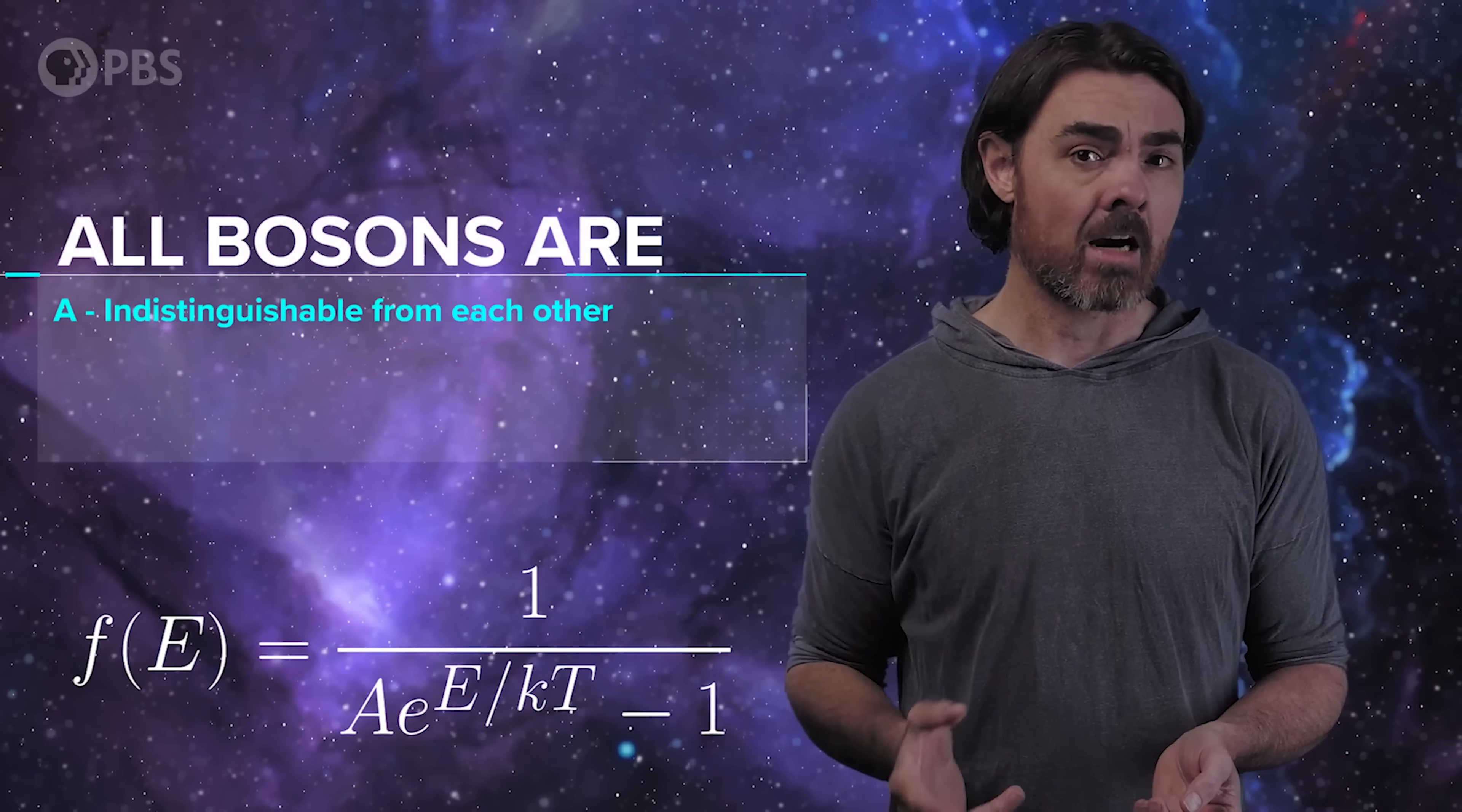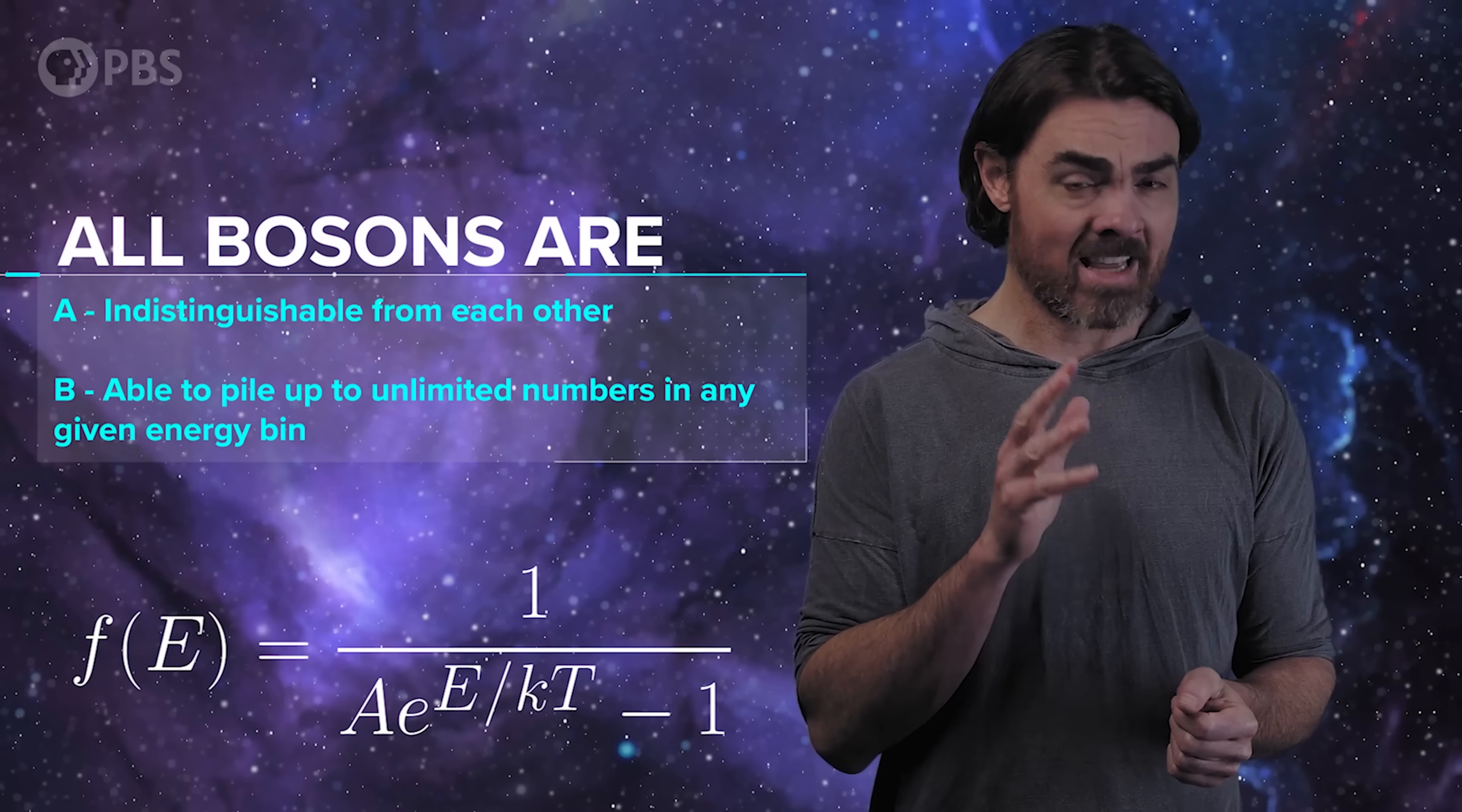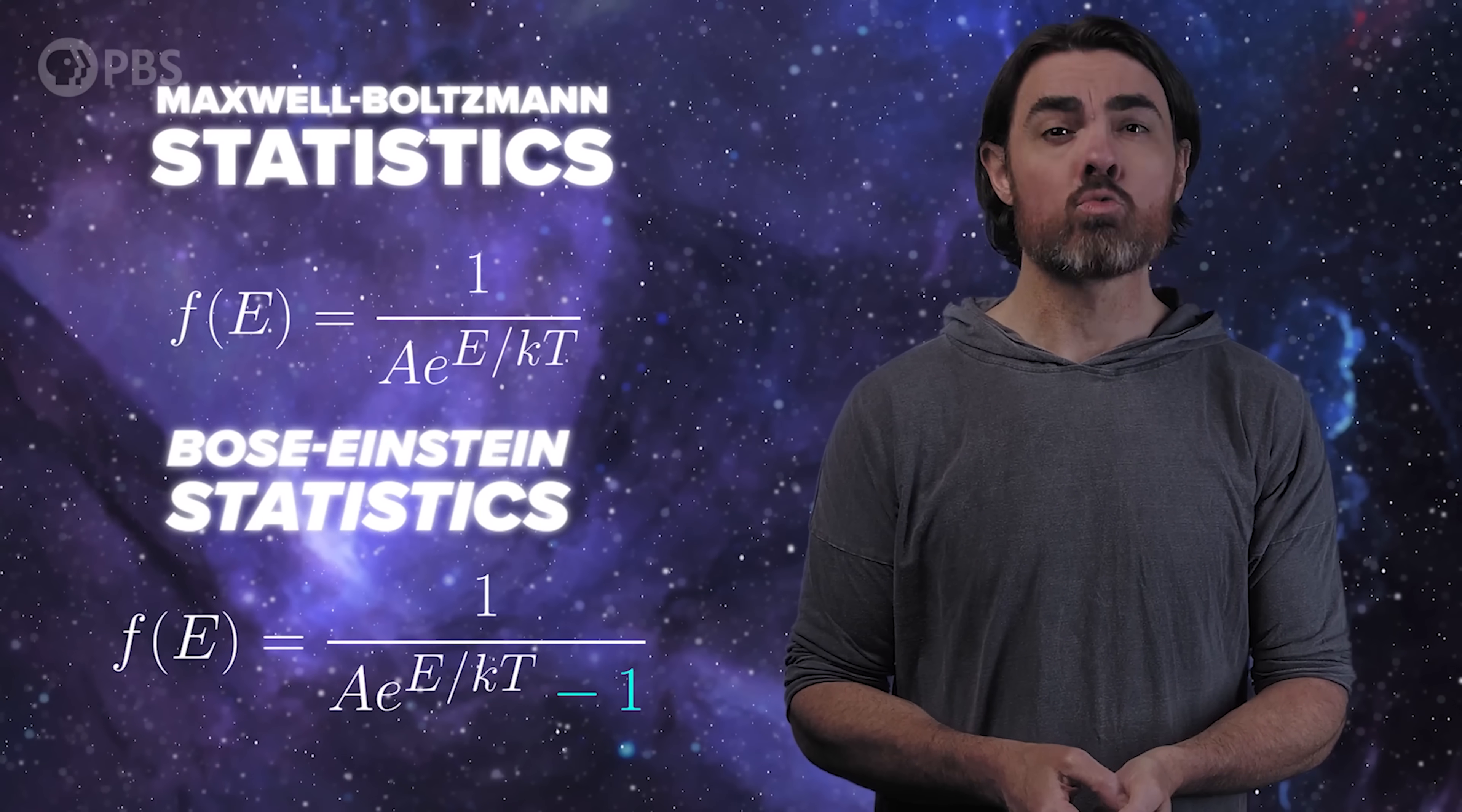It was discovered by Satyendra Nath Bose, working with Albert Einstein in 1925, and so we call this statistical behaviour Bose-Einstein statistics. Any type of particle that behaves this way is called a boson, and all bosons are indistinguishable from each other, and able to pile up in unlimited numbers into any given energy bin, and we'll come back to that last bit. The minus one makes hardly any difference for most circumstances, so we often just use the Maxwell-Boltzmann formula. But when that minus one matters, it really matters.